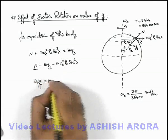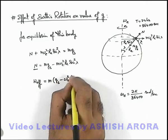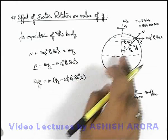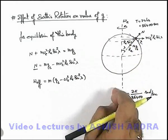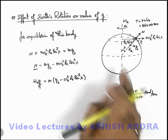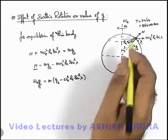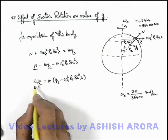This can be written as m times (g_s - ω_e² r_e sin² λ), where λ is the angle of location of body with respect to Earth's axis of rotation, which we can term as co-latitude of the location of point on Earth's surface where body is located.